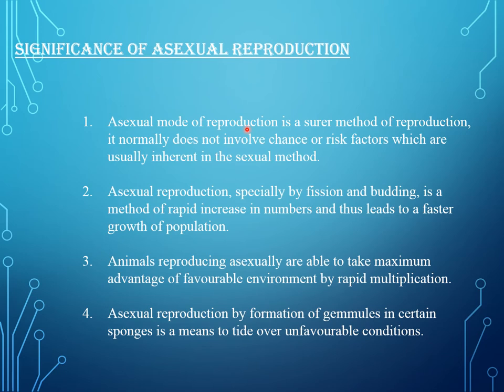Significance of asexual reproduction: Asexual mode of reproduction is a safer method of reproduction. It normally does not involve chance or risk factors which are usually inherent in the sexual method. Asexual reproduction, especially by fission and budding, is a method of rapid increase in numbers and thus leads to faster growth of population. Animals reproducing asexually are able to take maximum advantage of favorable environments by rapid multiplication. Asexual reproduction by formation of gemmules in certain sponges is a means to tide over unfavorable conditions.